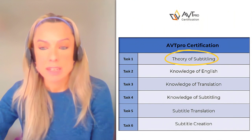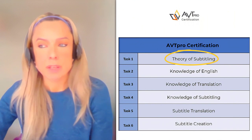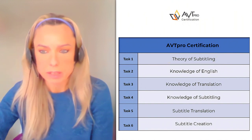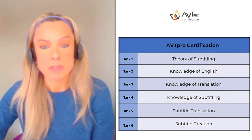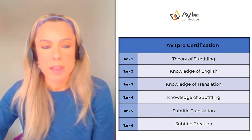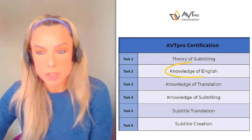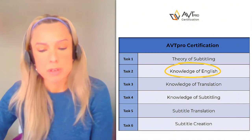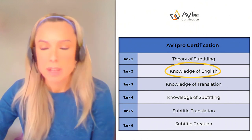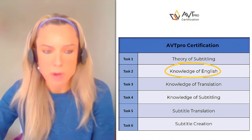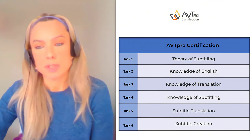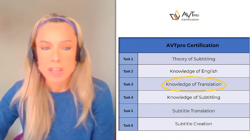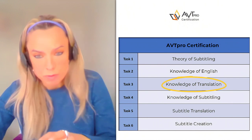The first task is in English and it evaluates your knowledge of the theory and practice of subtitling — it's a timed task. The second task is knowledge of English: it's in English and it evaluates your knowledge of English grammar, vocabulary, syntax, and so on.